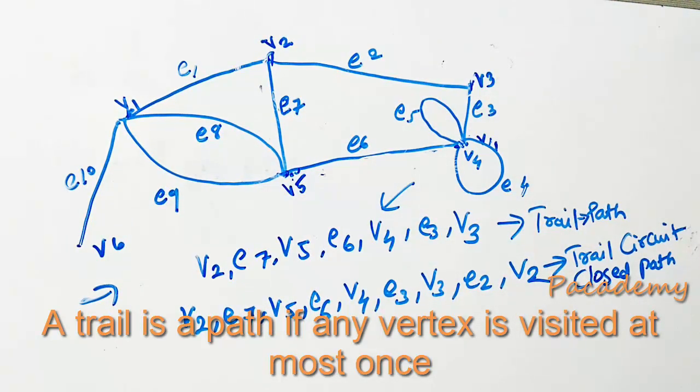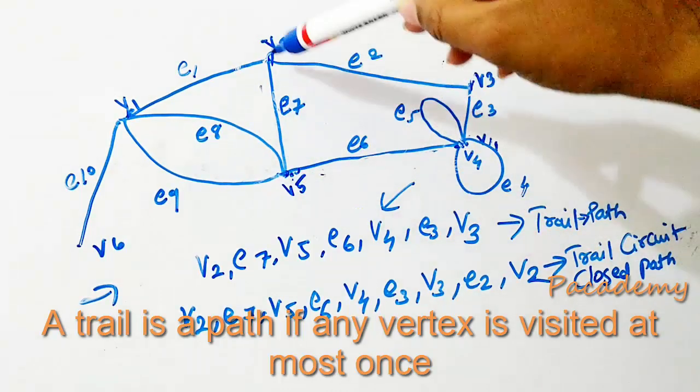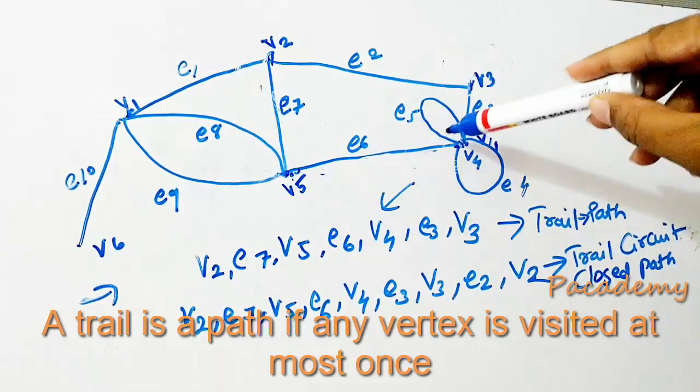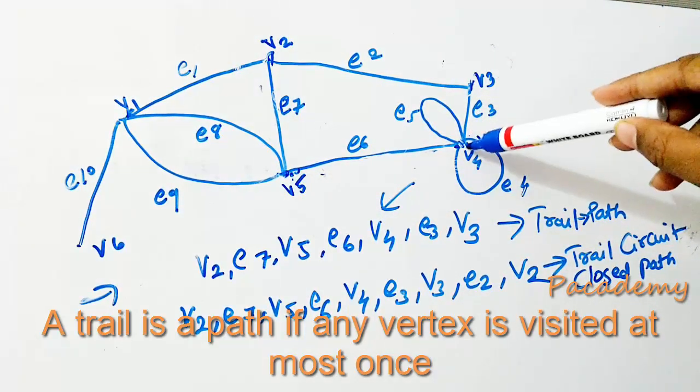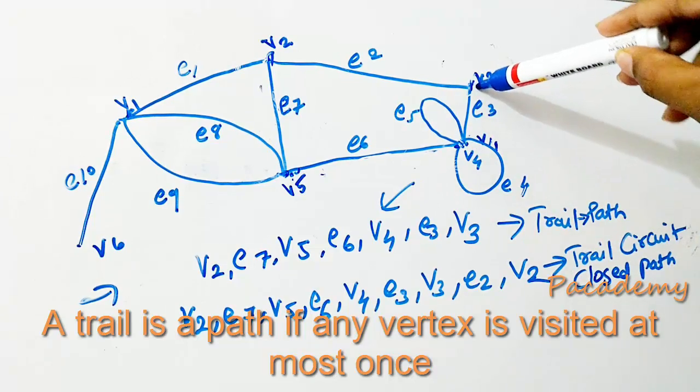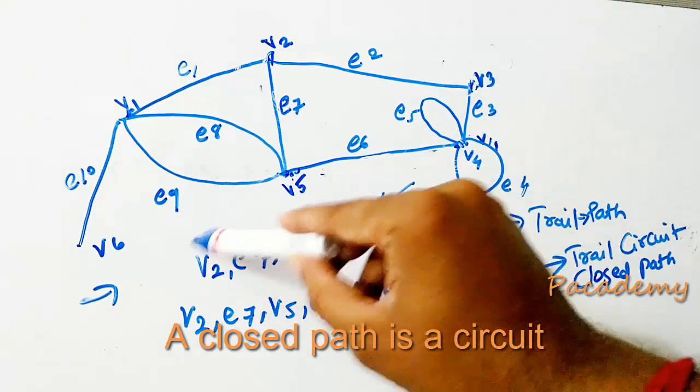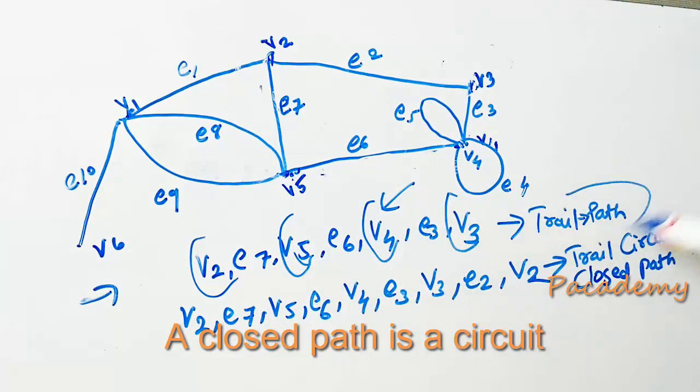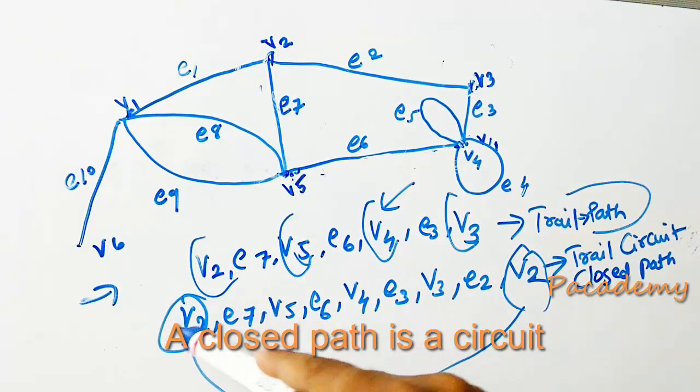A trail in which any of the vertices is visited only once is known as a path. In this case, from v2 to e7 to v5 to e6 to v4 to e3 and to v3, none of the vertices are visited two times, so this is a path.